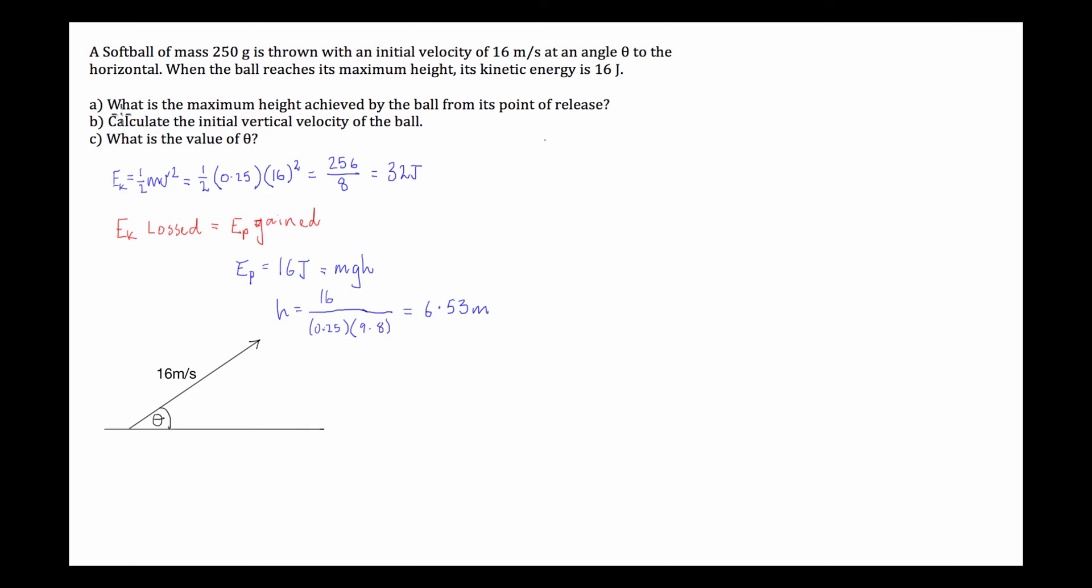Now it says calculate the initial vertical velocity of the ball. Now the way we're going to do this is we know that when we're at the ball's maximum height, I'll draw a little diagram on the side here, if we have a parabola, so here's the ground and something goes like this,